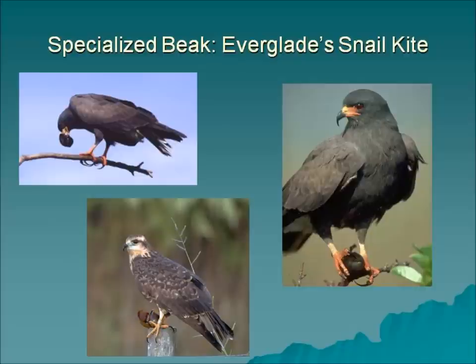Here's our endangered Everglades kite, also called the snail kite. This bird has evolved right alongside the apple snail, or green snail. The snail has a very specific curvature to its shell that the snail kite's bill matches precisely. They can insert their bill inside the shell, pierce through the carapace, reach into the interior, pull the muscle off the shell, and extract the snail's body.